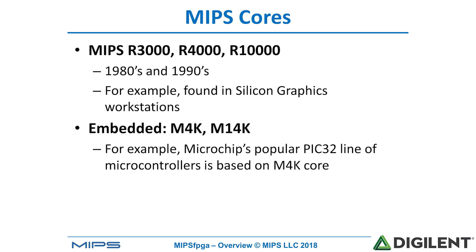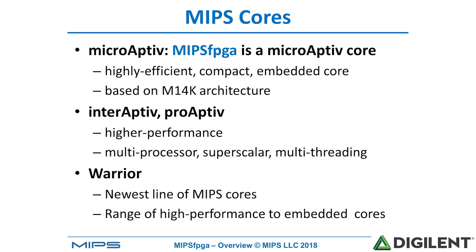Some of the embedded systems include the M4K and M14K. For example, Microchip's popular PIC32 line of microcontrollers is based on the M4K core. Current MIPS cores include microAptiv, interAptiv, and proAptiv, and the warrior class. MIPS FPGA is a microAptiv core — a highly efficient compact embedded core based on the M14K architecture. InterAptiv and proAptiv are higher performance versions of the core. The newest line of MIPS cores are called the warrior class and range from high performance to embedded cores.